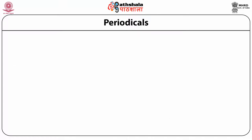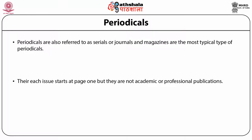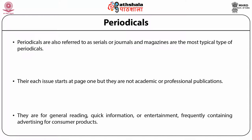Periodicals. A periodical is a publication with a distinct title which appears at stated or regular intervals, without prior decision as to when the last issue shall appear. It contains articles, editorials, features, columns, stories, or other writings by several contributors. Periodicals are important sources for current information on any subject. Periodicals are also referred to as serials or journals. Magazines are the most typical type of periodicals — each issue starts at page 1, but they are not academic or professional publications. They are for general reading, quick information, or entertainment, frequently containing advertising for consumer products.